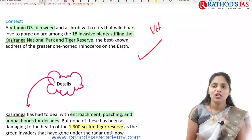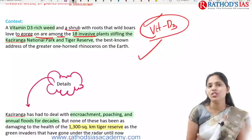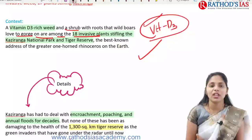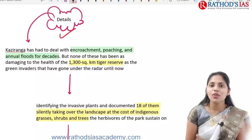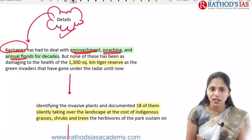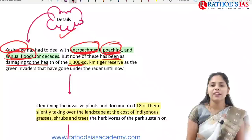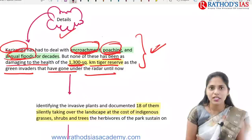In context, a Vitamin D3-rich wheat and a shrub with roots that wild boars love to gorge on are among the 18 invasive species seen in Kaziranga National Park and Tiger Reserve. Kaziranga has had to deal with encroachment, poaching, and annual floods for decades. But none of these has been as damaging to the health of the 1,300 square kilometer tiger reserve as the green invaders — the invasive weeds.